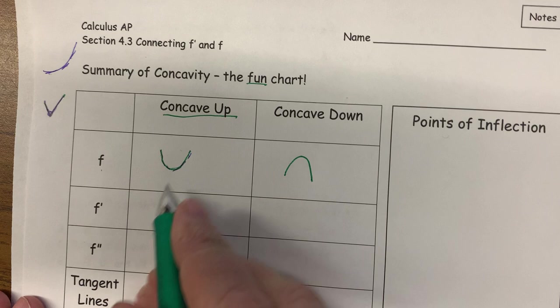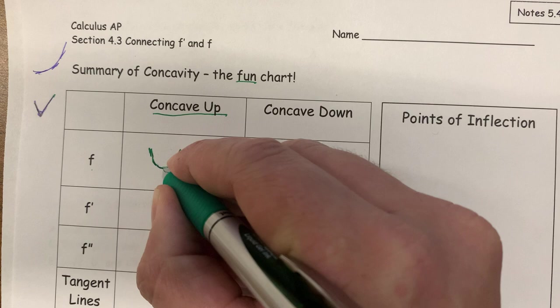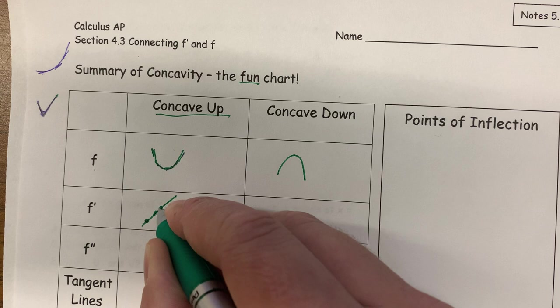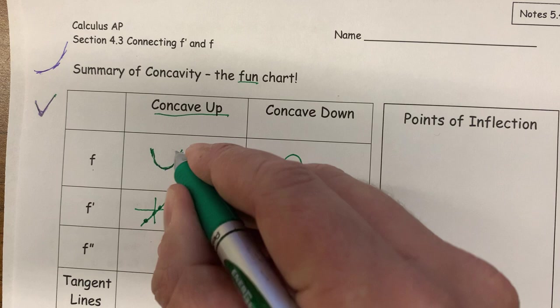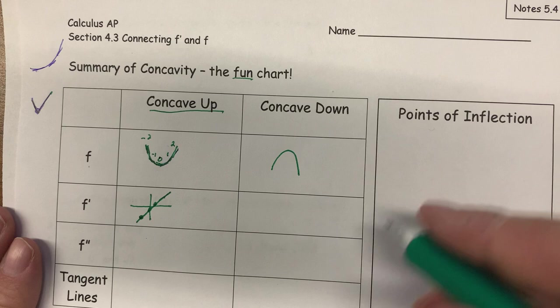If something is bending upwards, how does its derivative look? Well, if something is bending upwards, its derivative is getting higher and higher. The derivative is increasing in value — maybe the slope is negative, but it's getting less negative, then it's zero, then it's positive. The slopes are getting higher and higher: maybe the slope is negative two, then negative one, then zero, then one, then two.